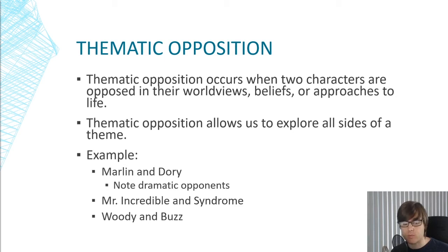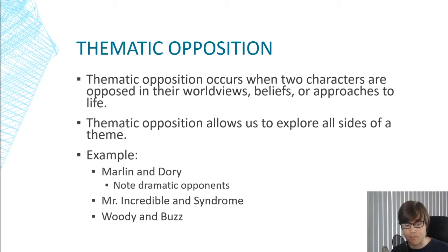In Finding Nemo, we've got Marlin and Dory, and fundamentally they have different approaches to life. Dory is very carefree — she is all about surrendering and letting go — whereas Marlin is all about holding on, being dependent, controlling, and preventing harm in others. They have fundamentally different worldviews and approaches to life. It's also important to note that they are not dramatic opponents: they both have the same goal of getting Nemo back, but they approach it very differently day-to-day.